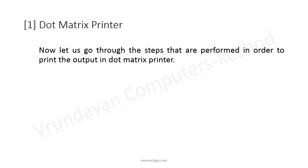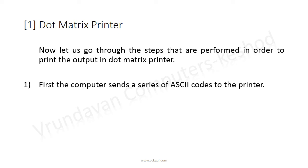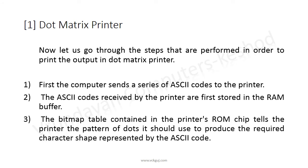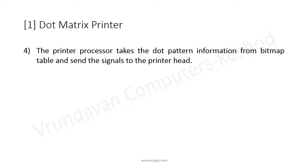The steps performed to print output on a dot matrix printer are as follows: first, the computer sends a series of ASCII codes to the printer. The ASCII codes received by the printer are first stored in a RAM buffer. The bitmap table contained in the printer's ROM chip tells the printer the pattern of dots to use to produce the required character shape represented by the ASCII code. The printer then sends the signal to the print head.